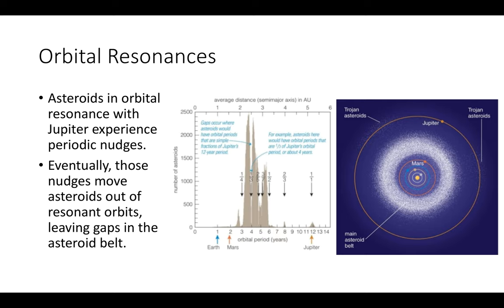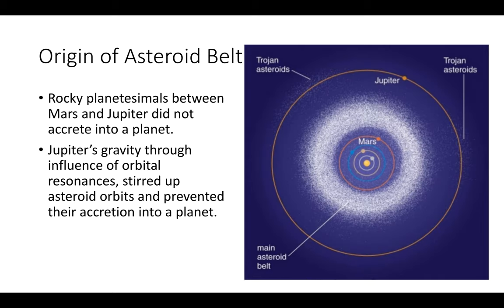Moving on to orbital resonances: asteroids in orbital resonance with Jupiter experience periodic nudges, hence the Trojan asteroids leading and following Jupiter. Eventually those nudges move asteroids out of their resonant orbits, leaving gaps in the asteroid belt. The origin of the asteroid belt is that rocky planetesimals between Mars and Jupiter did not accrete into a planet. Jupiter's gravity, through orbital resonance, stirred up asteroid orbits and probably prevented the accretion of all these asteroids into what could have been a fifth terrestrial planet.